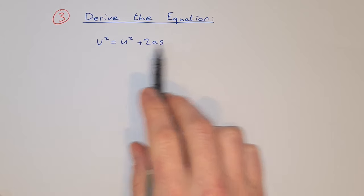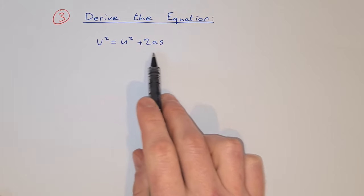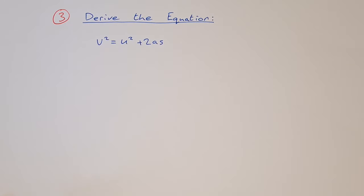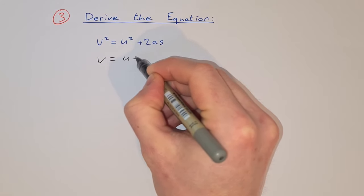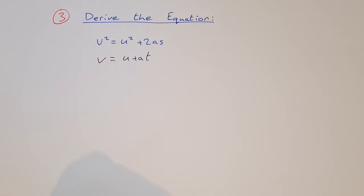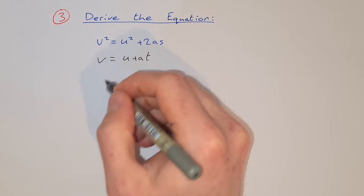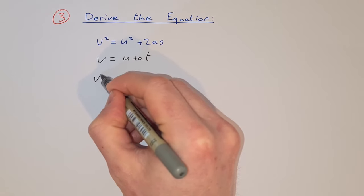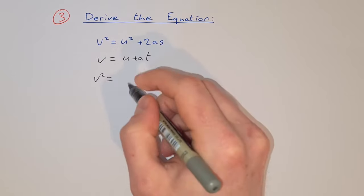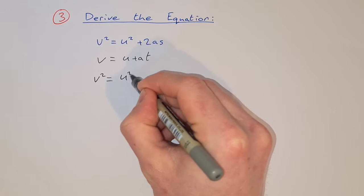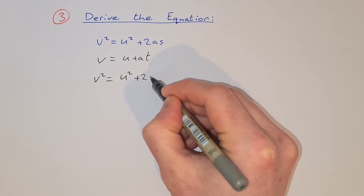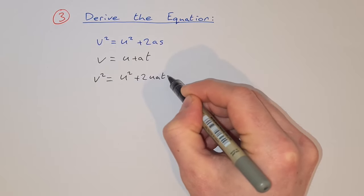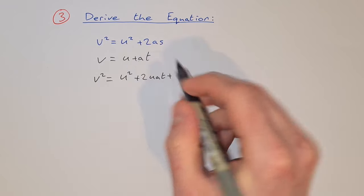Now we're asked to derive the equation v² = u² + 2as. To derive this one, we start with equation 1, which is v = u + at. What we're going to do is square both sides, so v² equals, squaring the right side, u² plus twice the product, so that's + 2uat + a²t².